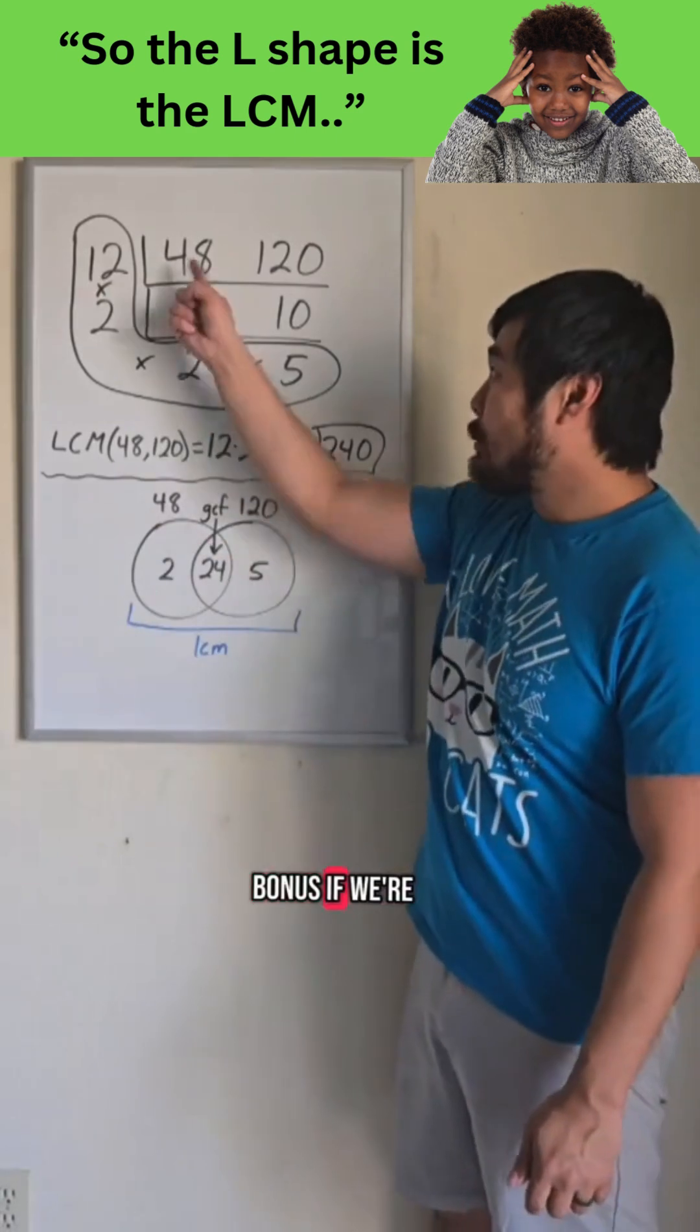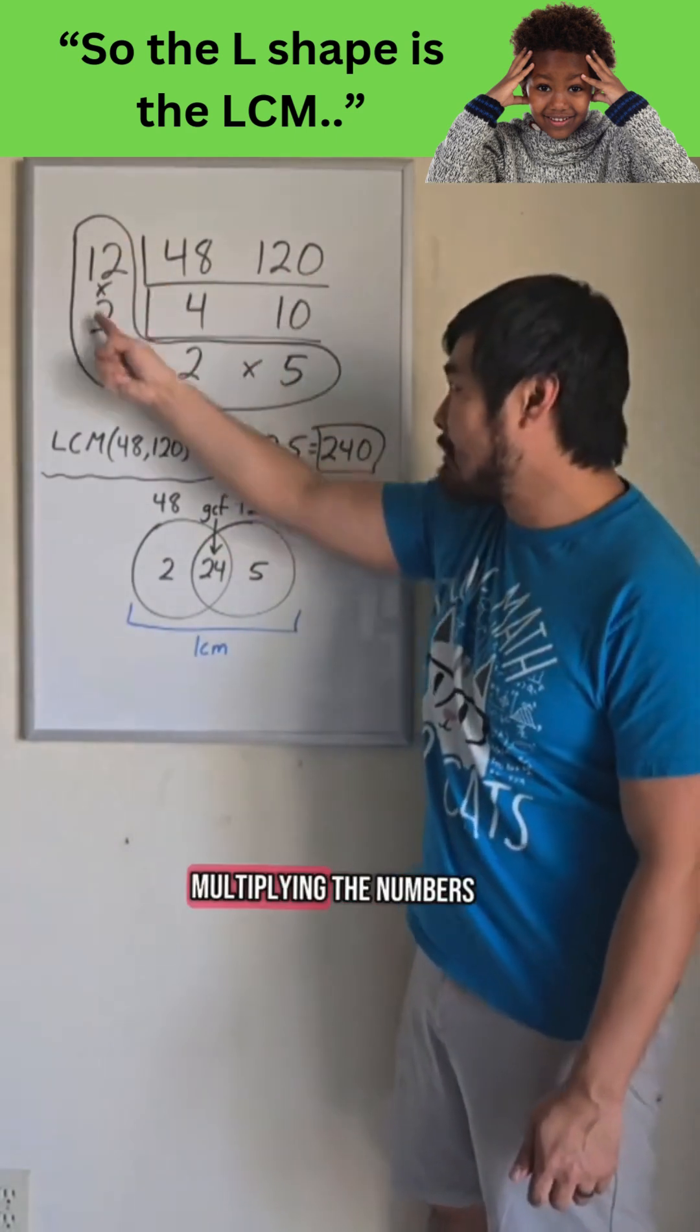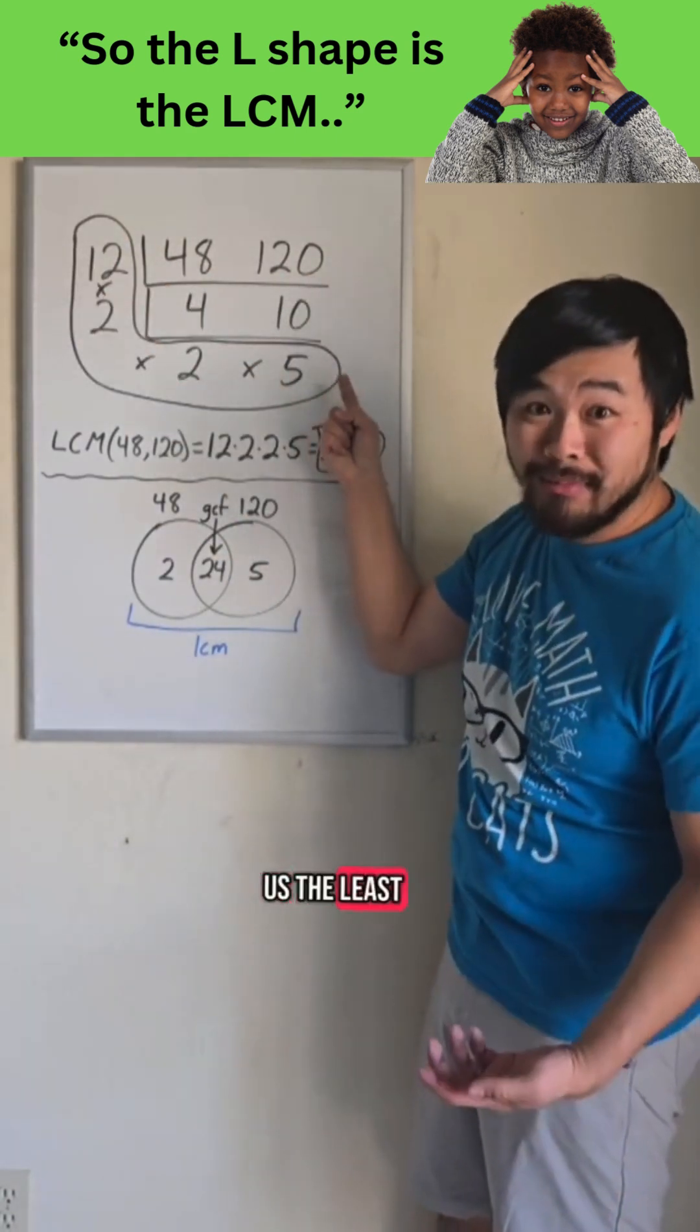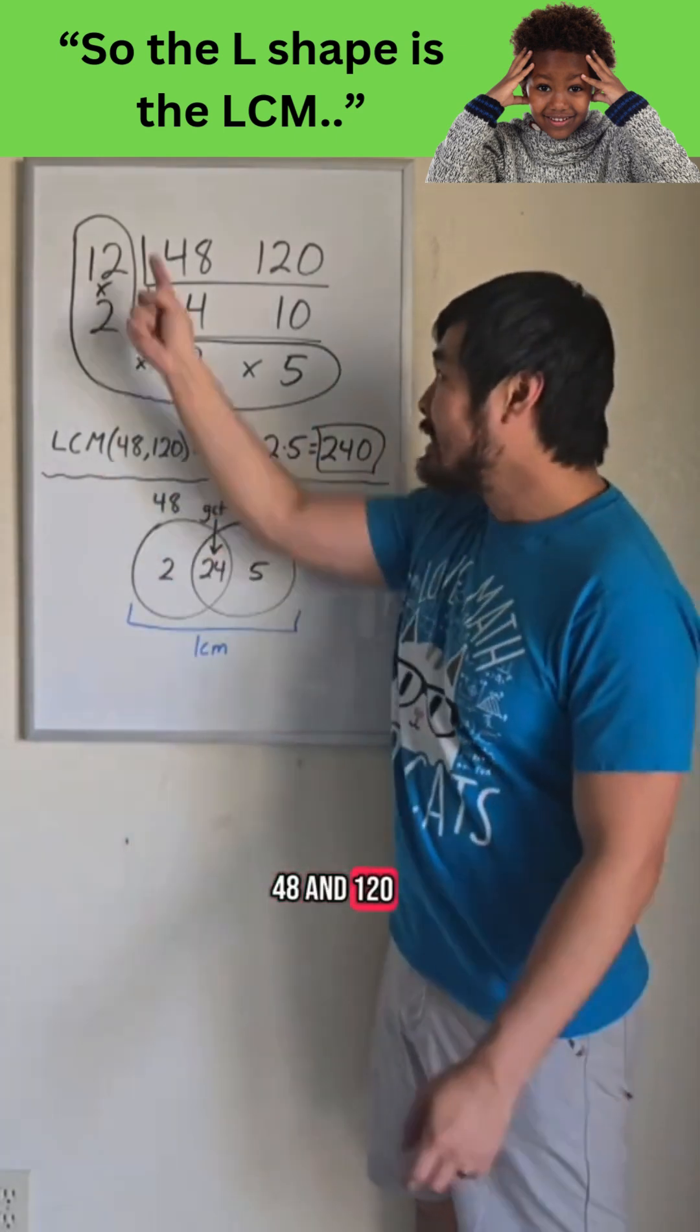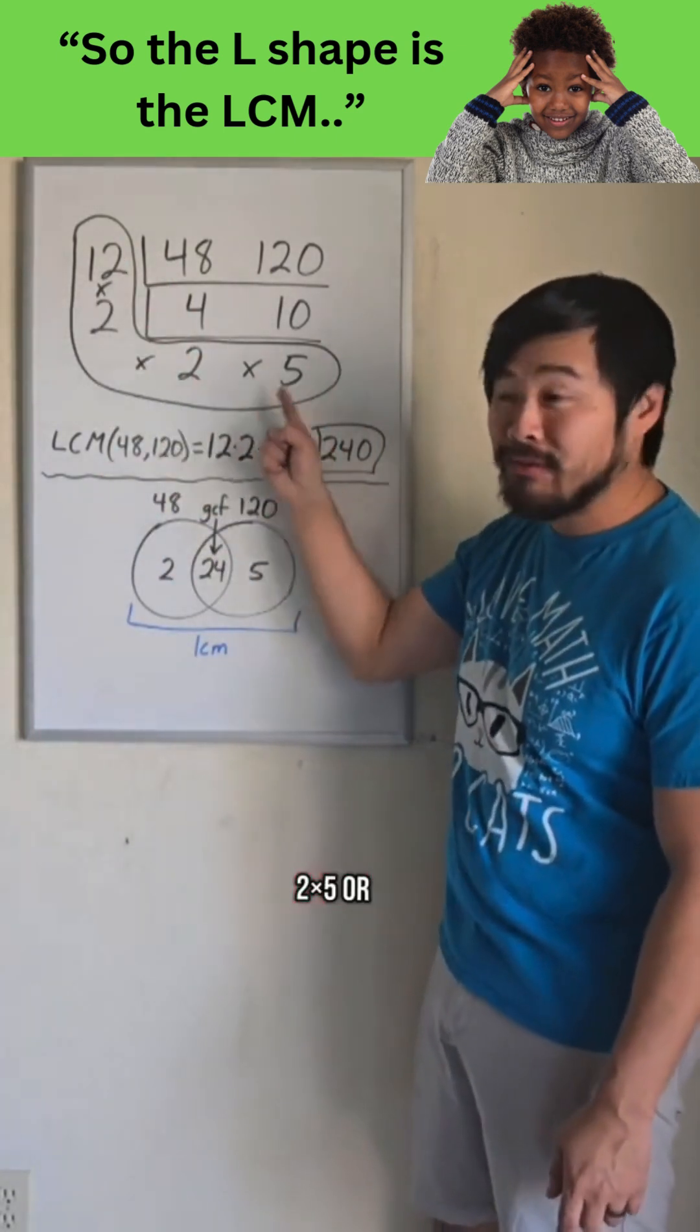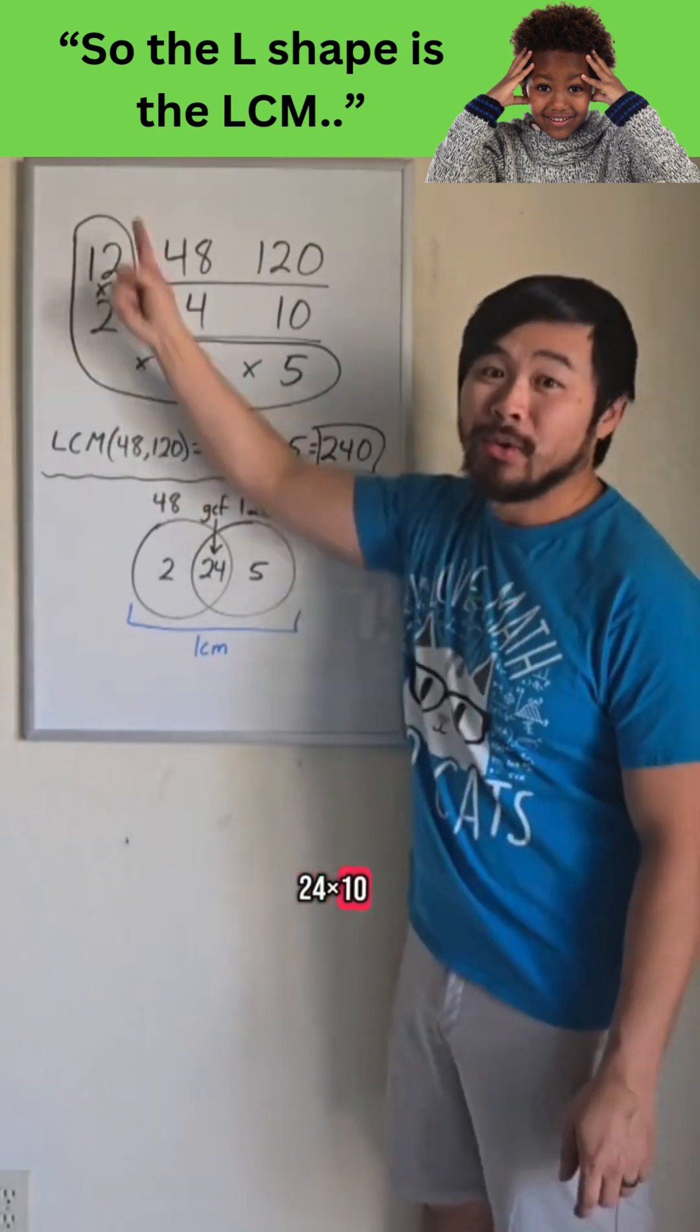And here's a bonus. If we're working with two numbers, multiplying the numbers in this L shape would give us the least common multiple. So the least common multiple of 48 and 120 is 12 times 2 times 2 times 5, or 24 times 10, which is 240.